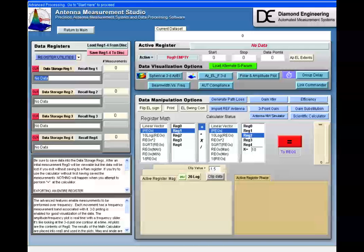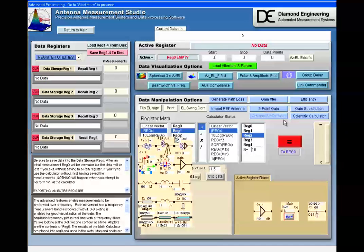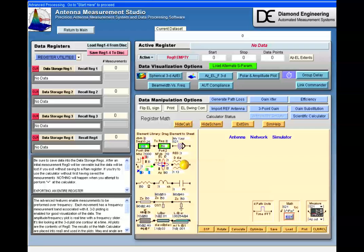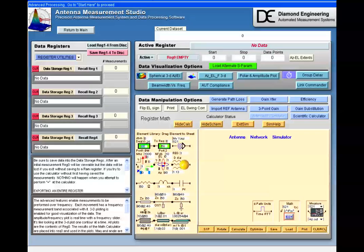In this video, we're going to look at the basics of the Antenna Network and Measurement Simulator. The simulator is an icon-based vector 2-port cascade with series and parallel branches. Each icon represents a single element.